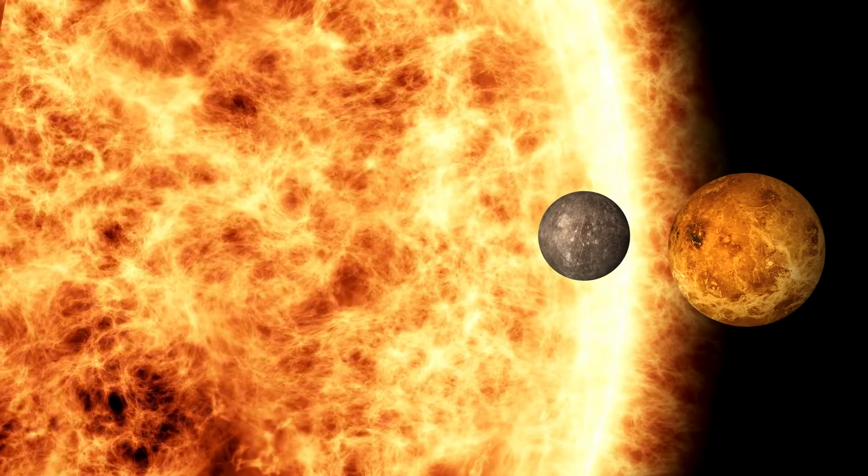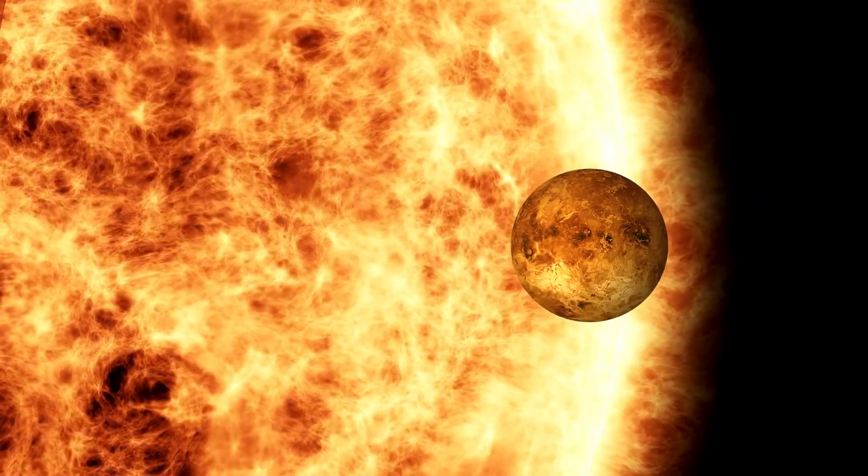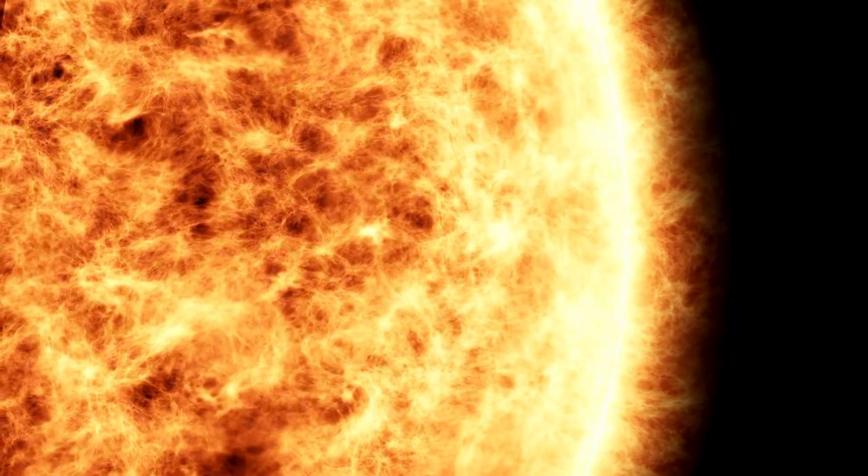On the other hand, if the brown dwarf gets too close to the Sun, Mercury and Venus will likely be absorbed by the Sun or the brown dwarf. In either case, it would be the end for both planets.